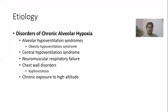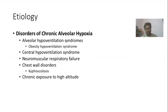Chronic alveolar hypoxia is also an important cause of cor pulmonale. Diseases causing chronic alveolar hypoxia include alveolar hypoventilation syndromes like obesity hypoventilation syndrome or central hypoventilation syndrome, neuromuscular respiratory failure, and chest wall disorders like kyphoscoliosis. Patients who live at high altitude for a long time can also develop cor pulmonale due to chronic alveolar hypoxia.